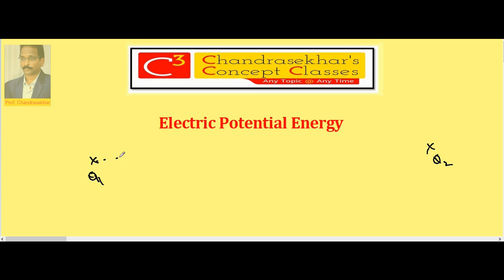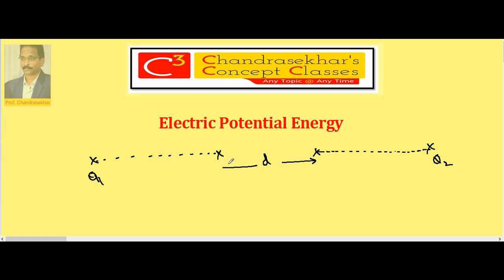Now, I want to bring them from infinity to a finite distance of separation. Q2 came to this position, Q1 came to this position — say, the distance of separation is D. The work done in bringing these two charges from infinity to a finite distance of separation is stored in the system as Potential Energy. That is Electric Potential Energy.